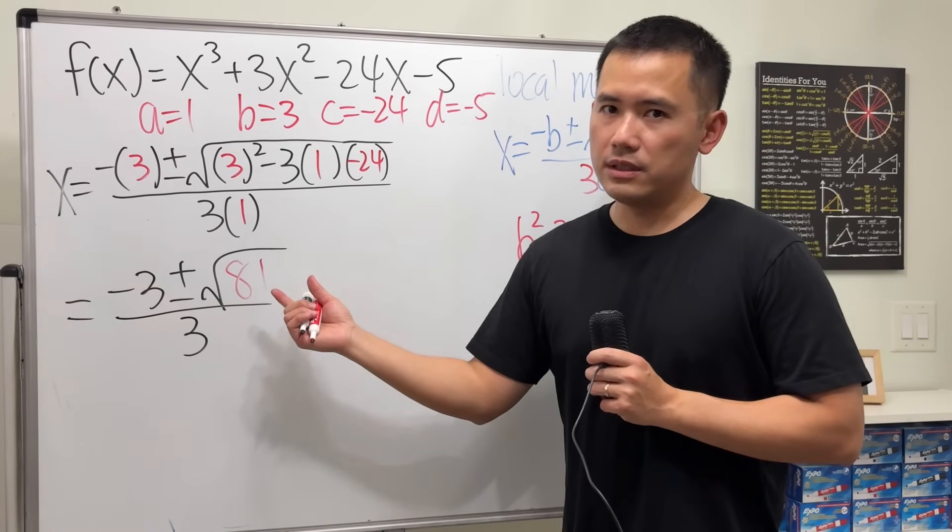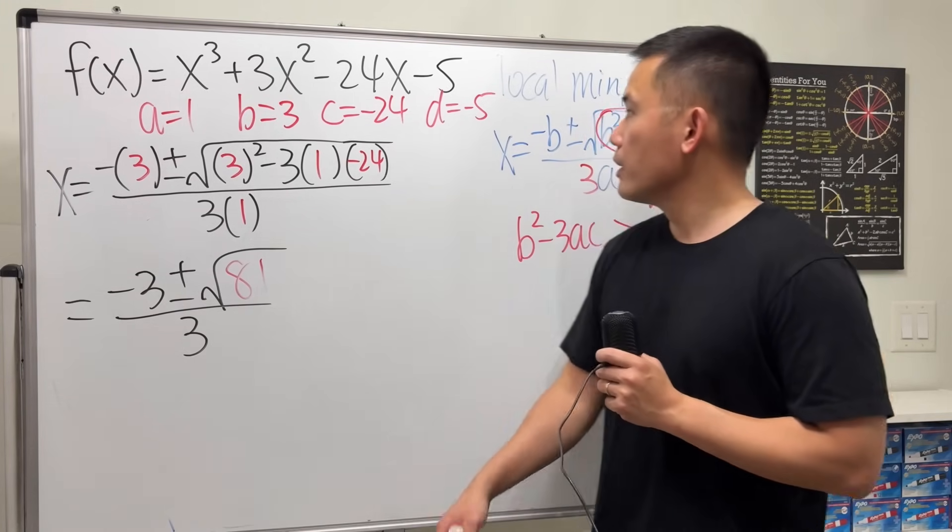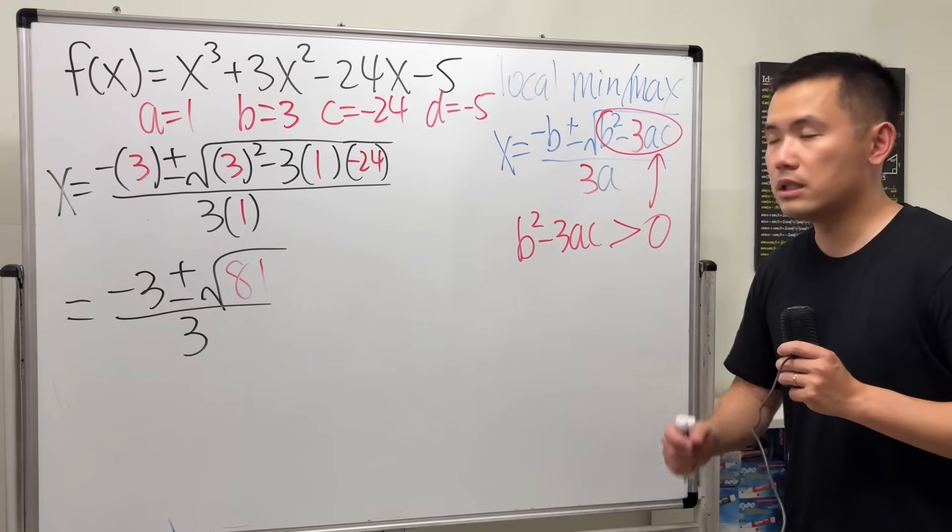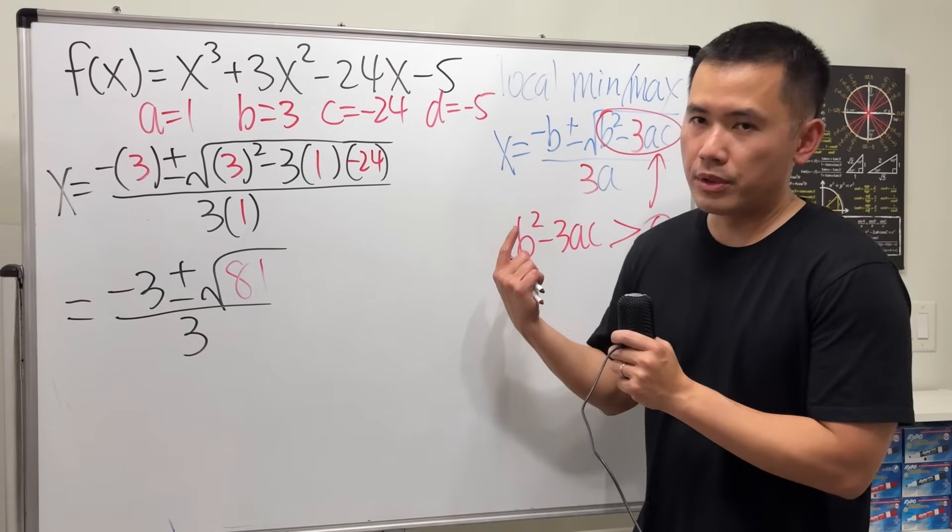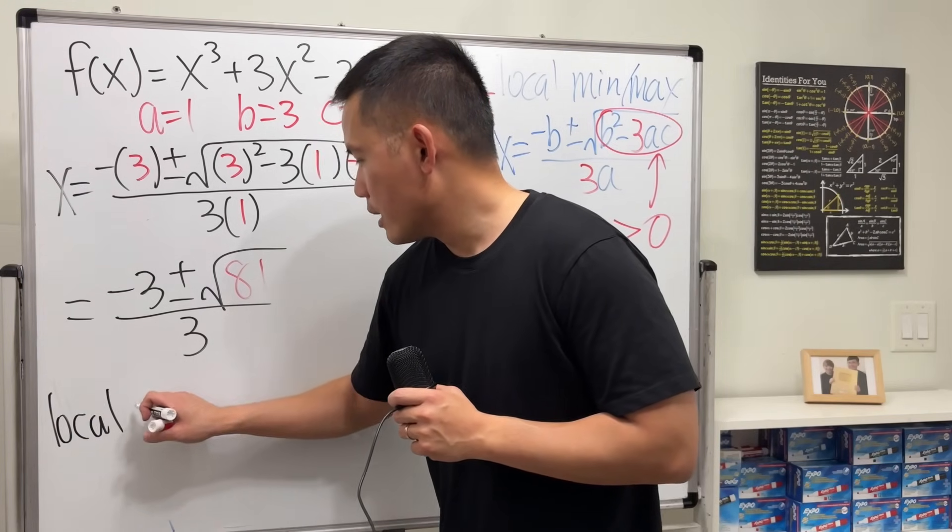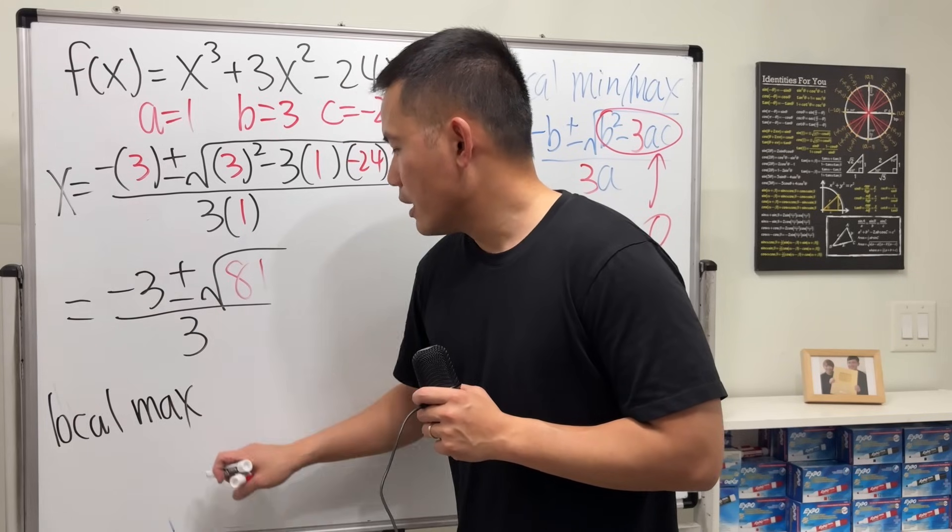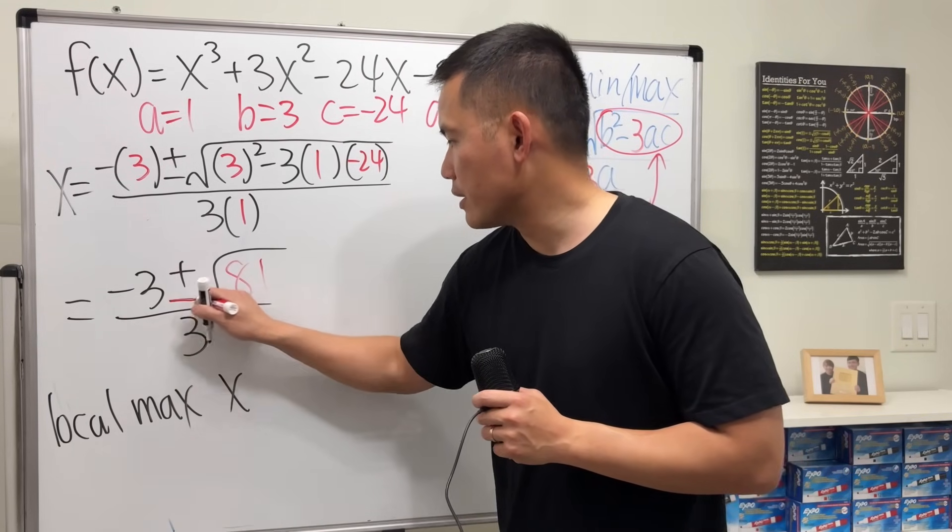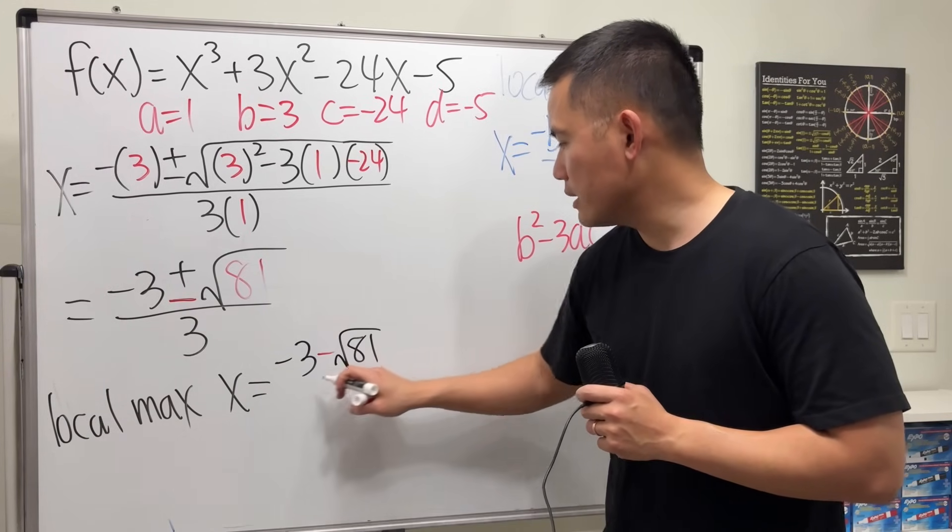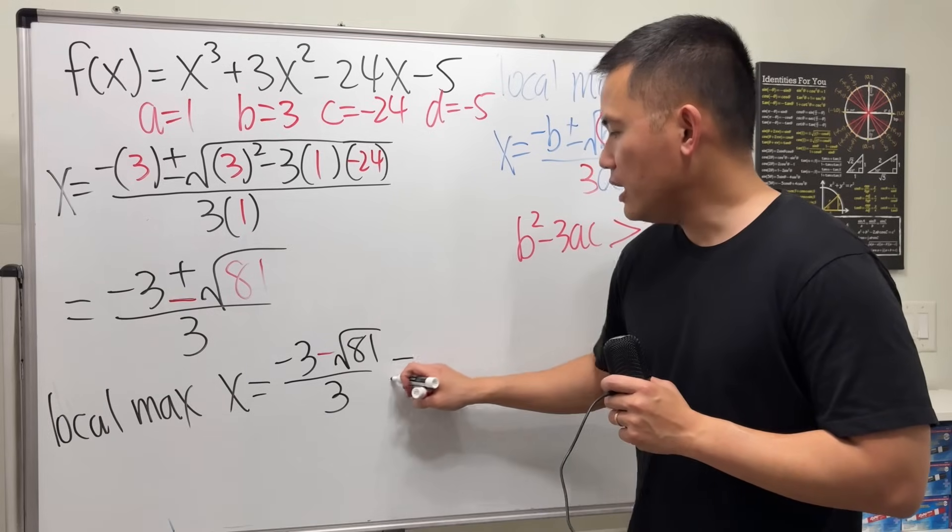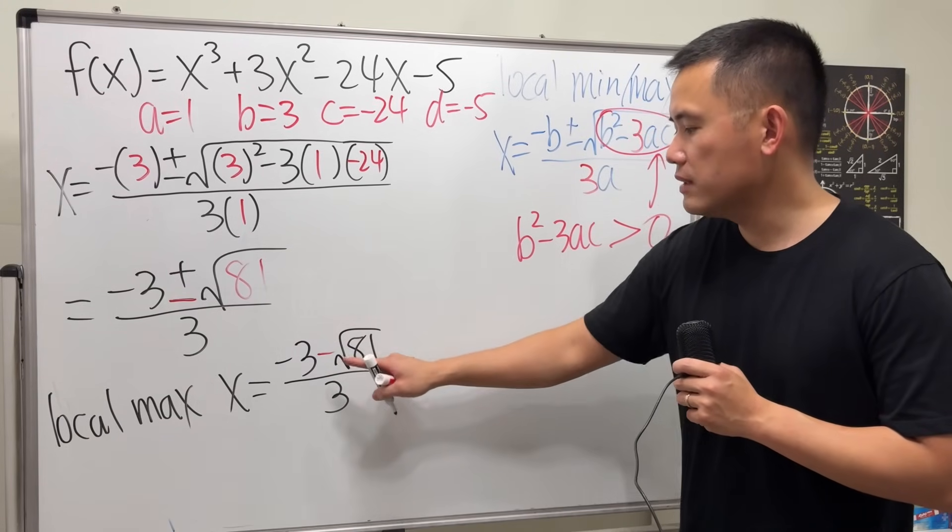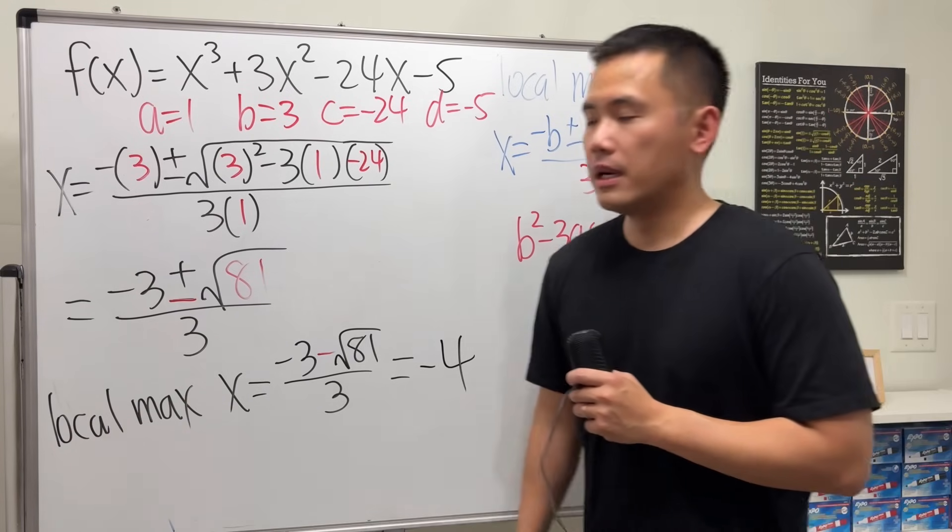So this we can see we have two possibilities. This formula includes both minimum and also the maximum, but you have to know which one is what. One way to see it, you can just remember it's always going to be like this. The local max is going to be at you take the minus right here, so you will have negative 3 minus square root of 81 over 3. And if you work that out, that's negative 3 minus 9, which is negative 12 divided by 3 is negative 4.